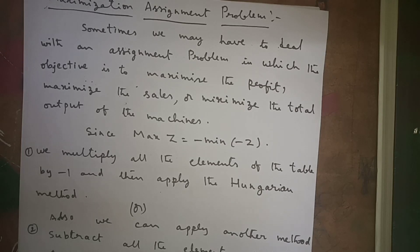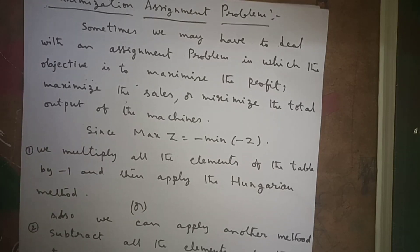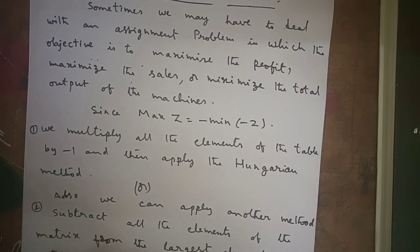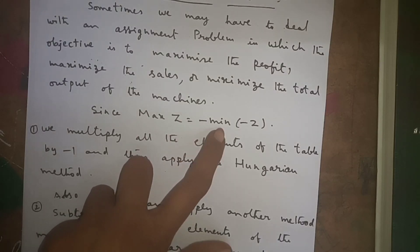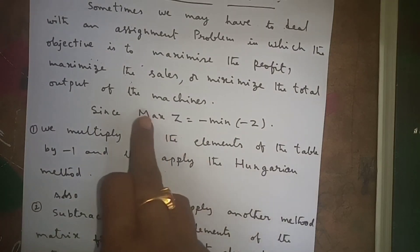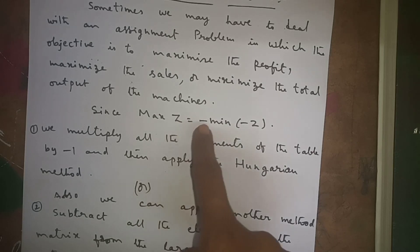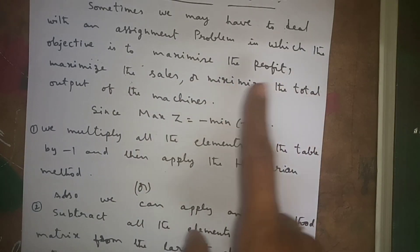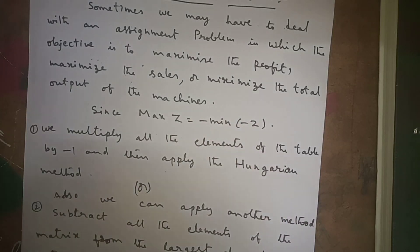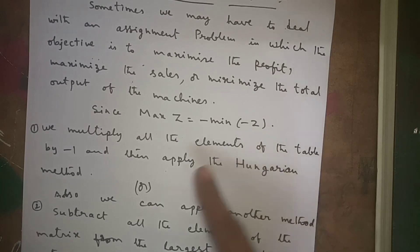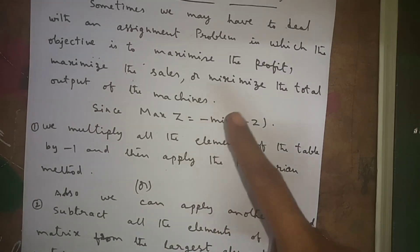At that time, what do we have to do? There are two methods. We know that max Z is equal to minus minimization of minus Z. In the simplex method also we did like that - by multiplying both sides with minus one, you get max Z equals minus minimum of minus Z. To solve maximization assignment problems, there are two ways you can apply.